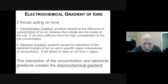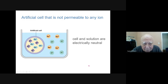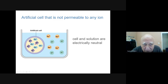The combination of concentration and electrical gradients is called the electrochemical gradient — there's a difference in concentration from outside to inside and a difference in charge from inside to outside. Here's an artificial cell: it's not permeable to any of these ions, so it's going to be electrically neutral.